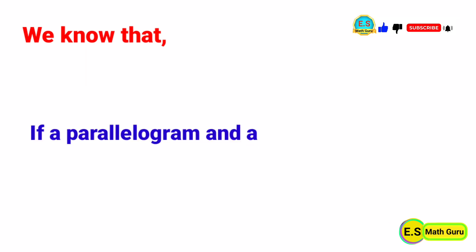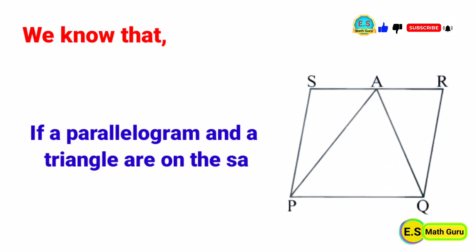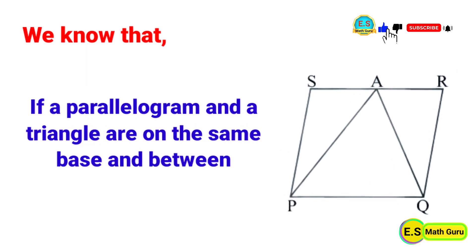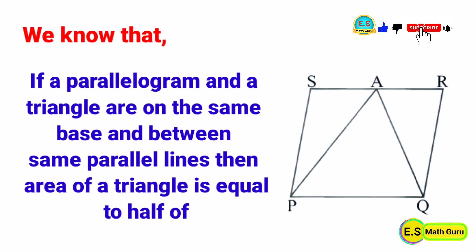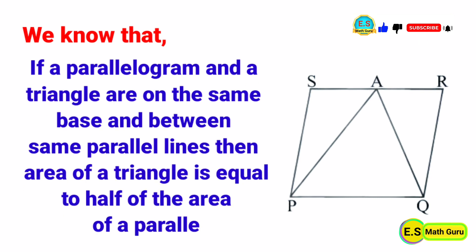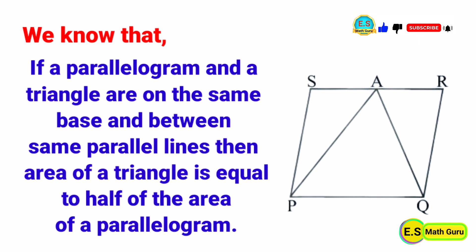We know that if a parallelogram and a triangle are on the same base and between the same parallel lines, then the area of the triangle is always equal to half of the area of the parallelogram.